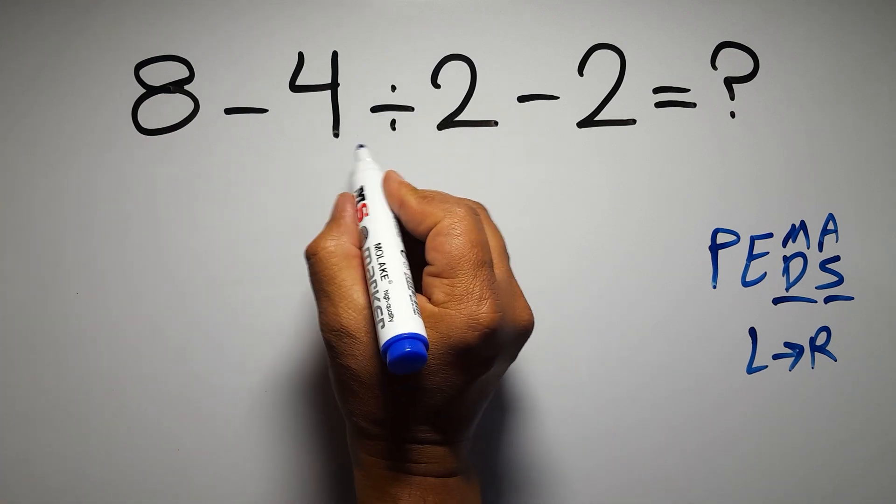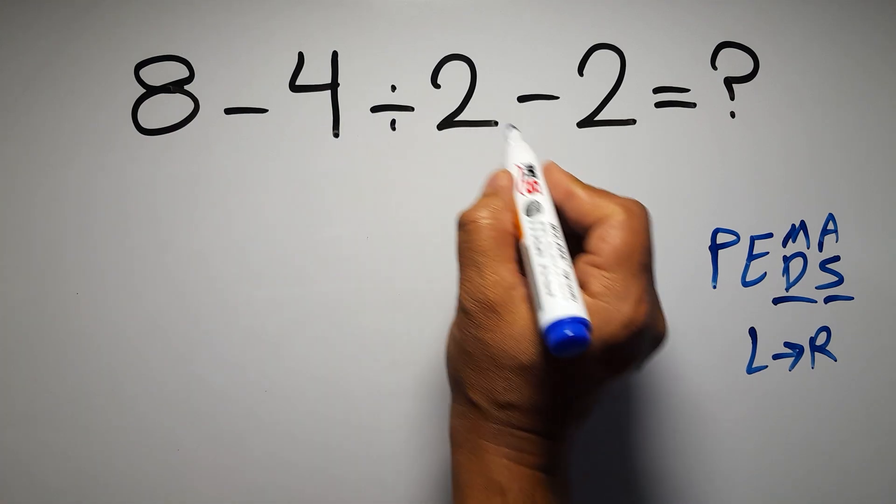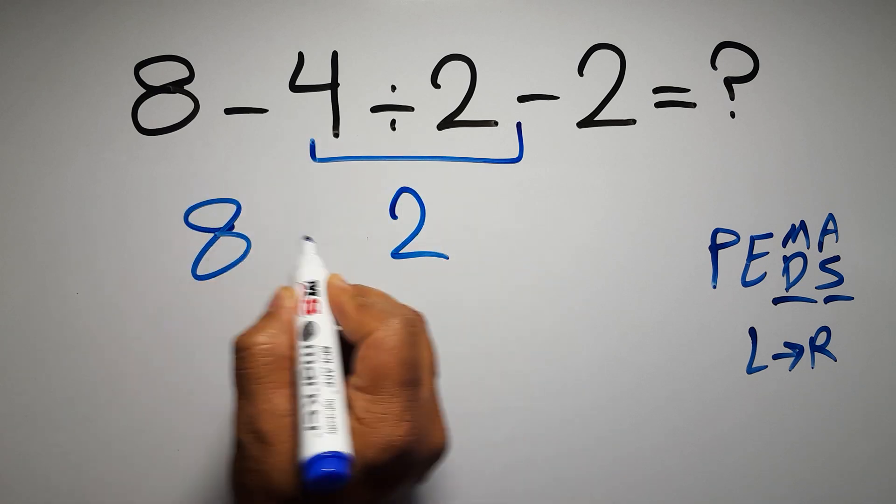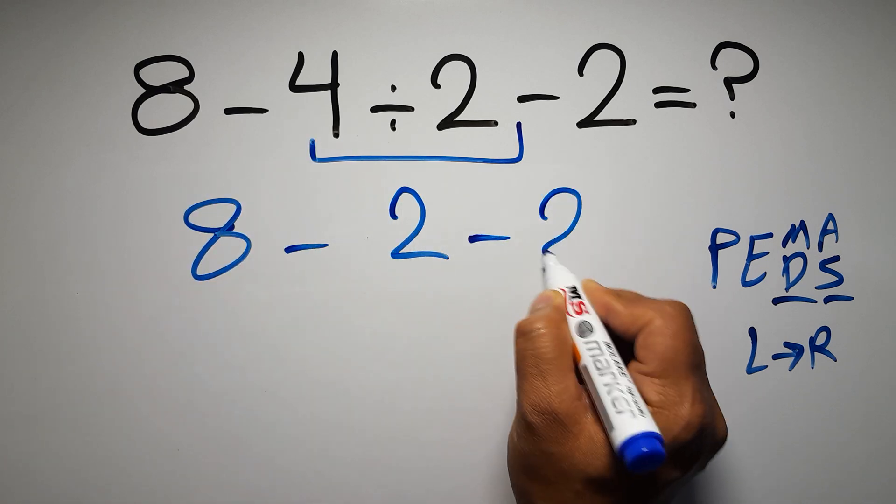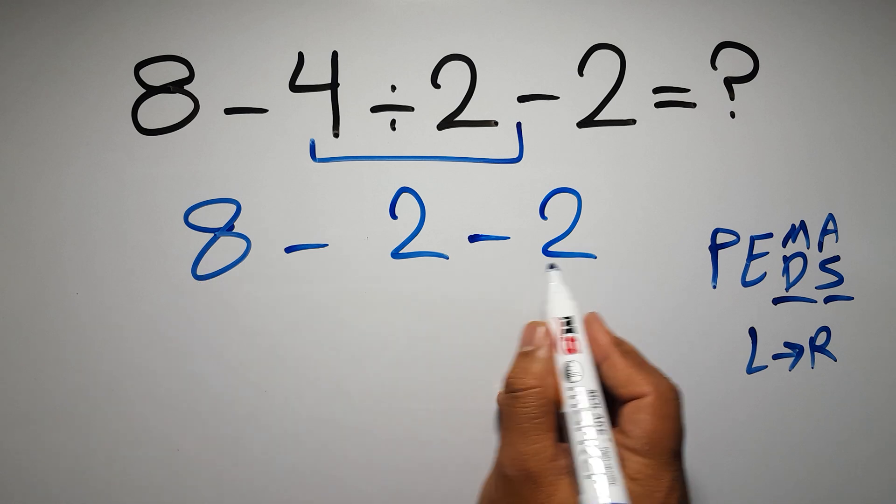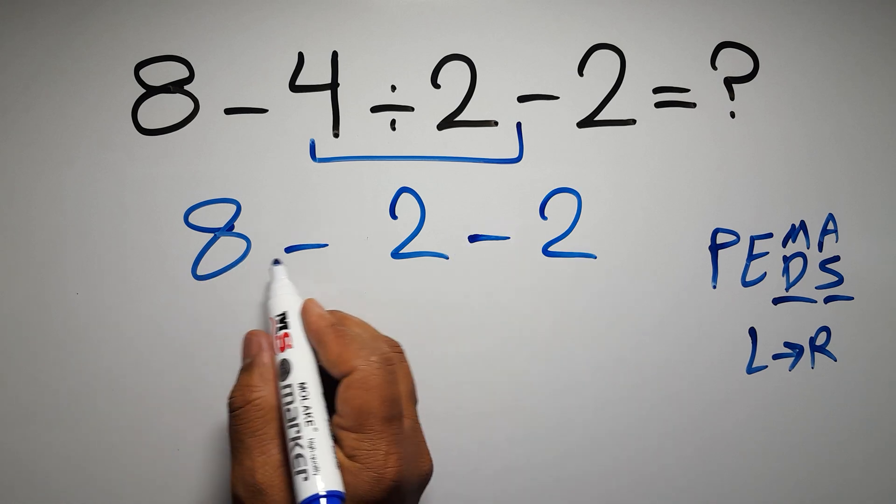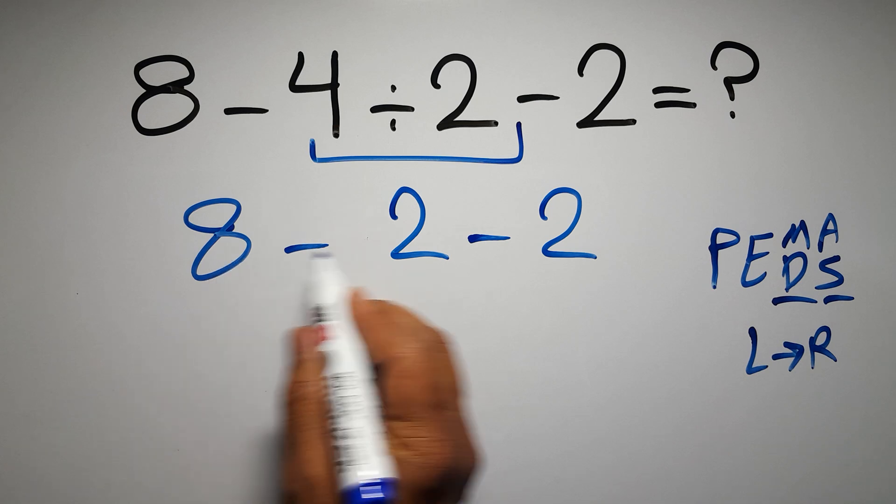So first this division: 4 divided by 2 gives us 2. Now we have 8 minus 2 minus 2. In this expression we have two subtractions, and when we have more than one subtraction in an expression we have to work from left to right.